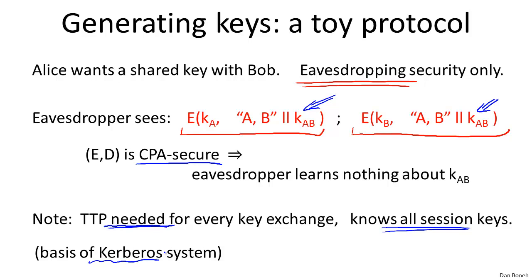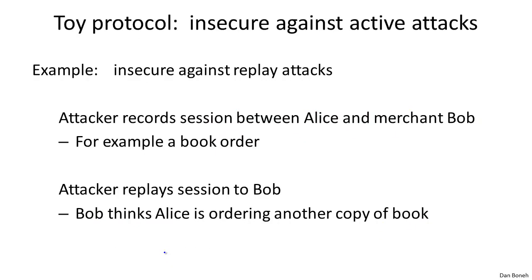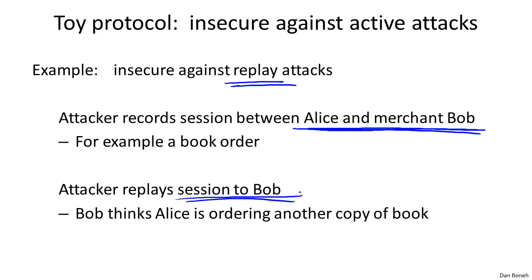This is our first example of a key exchange protocol that allows Alice and Bob to set up shared keys. However, this is just a toy protocol — very simple — and is only secure against eavesdropping attacks. It's actually completely insecure against an active attacker. For example, consider replay attacks: an attacker records the conversation between Alice and an online merchant Bob — say, Alice orders a book and Bob charges and ships it. The attacker can replay the conversation to Bob at a later time, and Bob will think Alice reordered another copy, charging her again. This shows why this protocol should never be used in the real world.